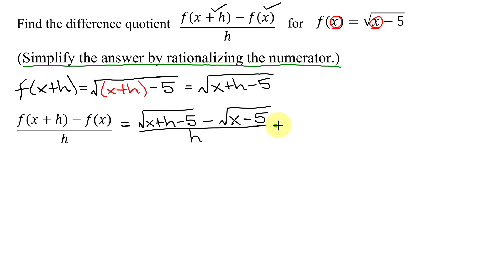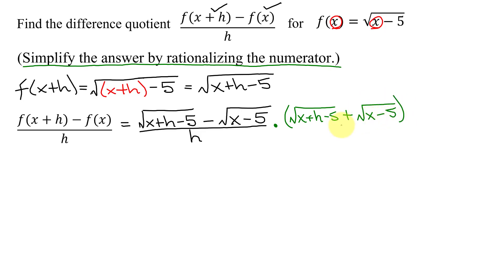Normally we rationalize the denominator, but in this case we're going to rationalize the numerator. We do that by multiplying by the conjugate — the same two expressions with the opposite sign between them. So the conjugate is the square root of x+h minus 5 plus the square root of x minus 5. Since we're multiplying the numerator by the conjugate, we also multiply the denominator by the exact same thing.